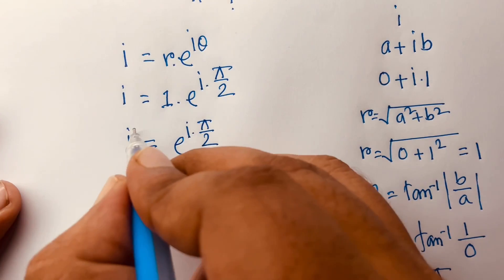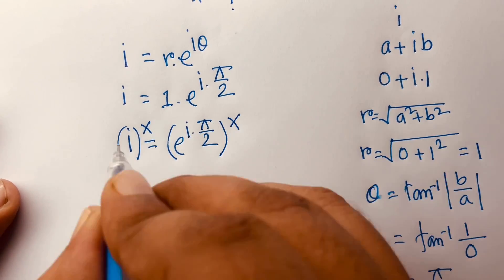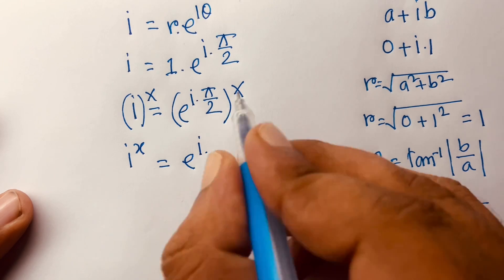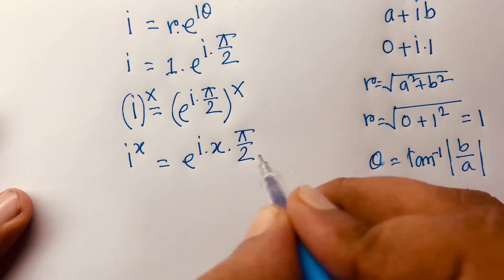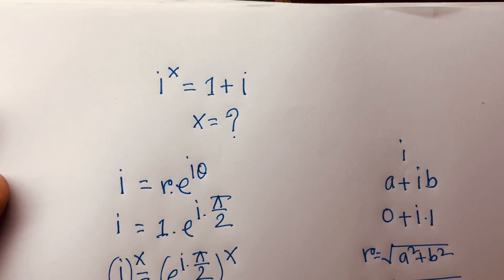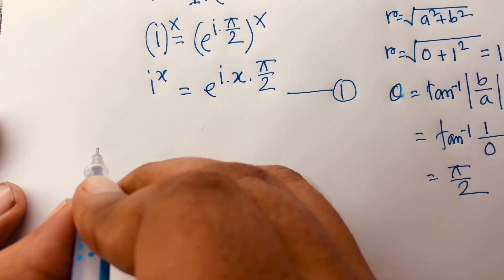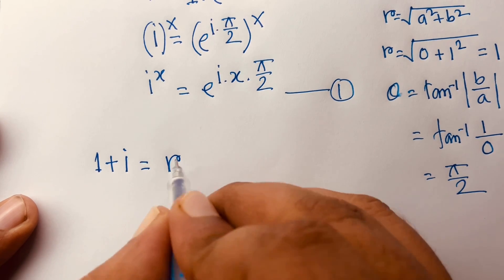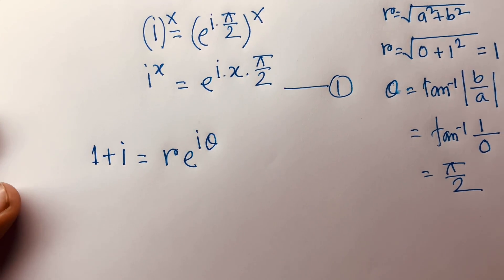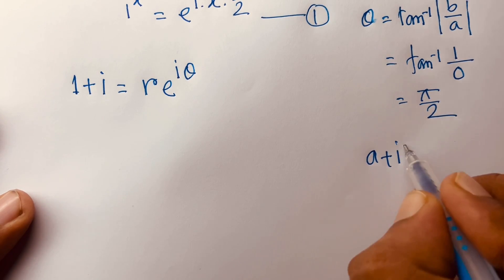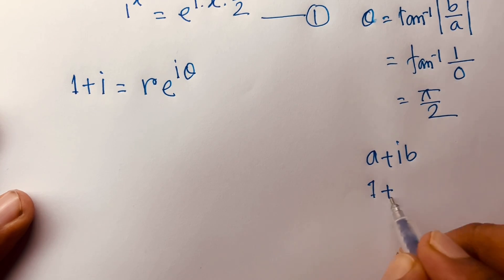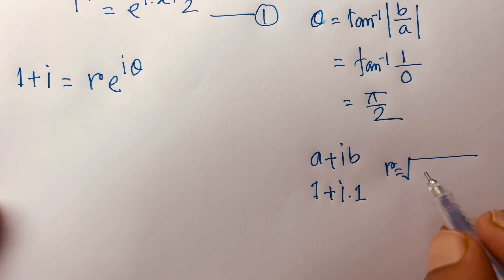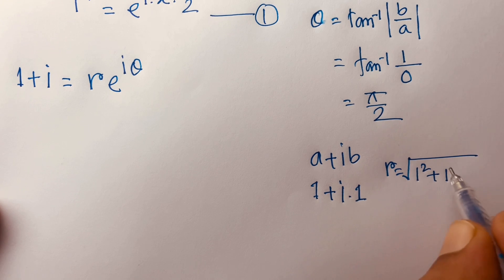So i can say i equals e to the power i times pi over 2. Then raising both sides to the power x, i to the power x is equal to e to the power i times x times pi over 2. This is our first equation. Now for the other side, here is 1 plus i in polar form r·e^(iθ), where a is equal to 1 and b is equal to 1.